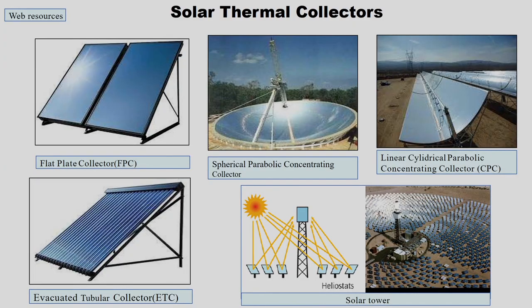There are many orientations with which you can arrange concentrating collectors. If you want in-depth knowledge about the optical system, you are requested to refer the references given. As we have seen in the last lecture on non-concentrating collectors, the FPC and ETC come under that category. Both beam and diffusive radiation is collected by the absorber plate and used for transferring that collected radiation into working fluid for thermal applications.